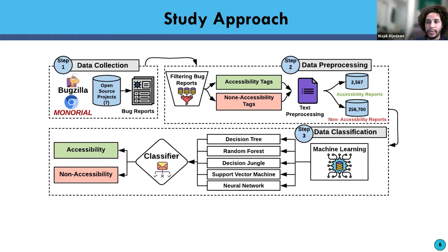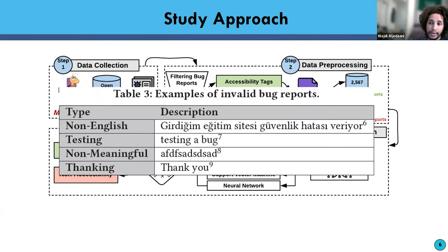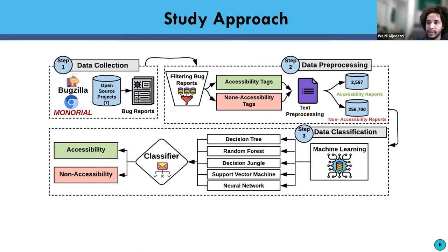Second, data pre-processing: we filtered based on accessibility tags, then did text pre-processing — removing all non-English text since we focused only on English language bug reports, and removing test reports which have no meaningful value as bug reports. Third, data classification: we chose five algorithms — decision tree, random forest, decision jungle, SVM, and neural network — to classify as accessibility or non-accessibility. We applied tokenization, lemmatization, stop word removal, and other NLP steps to clean the data, followed by feature hashing for feature engineering. Data was split 80/20 for training and testing, then we did cross-validation and prediction.